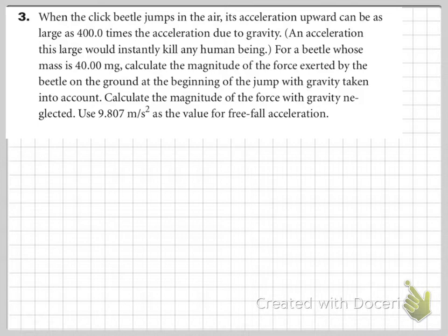Calculate the magnitude of the force with gravity neglected. And we're told to use 9.807 meters per second squared as the value for free fall because the numbers we'll be dealing with here are so small that if you use 9.81, your lack of apparent precision will cause you problems.